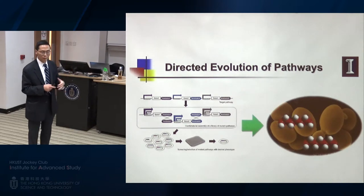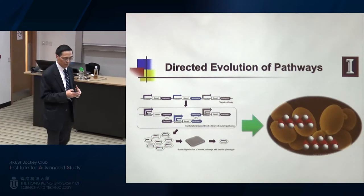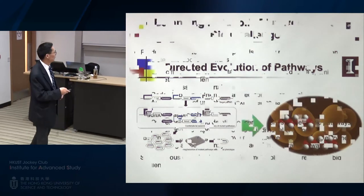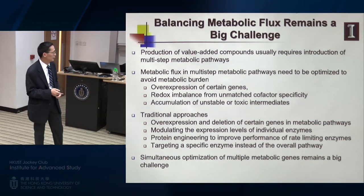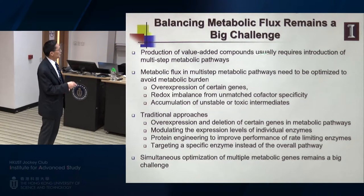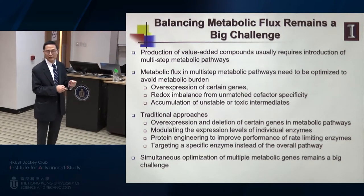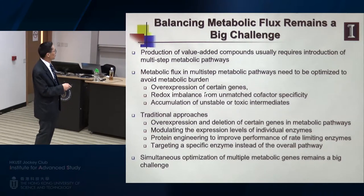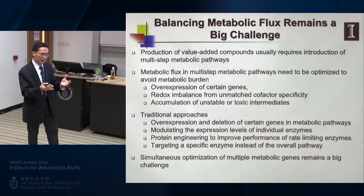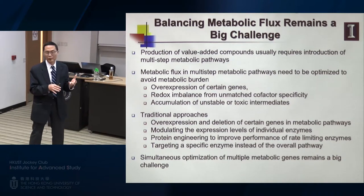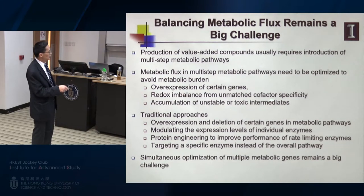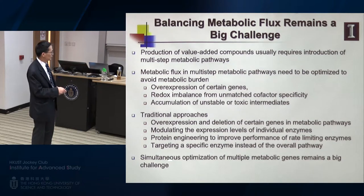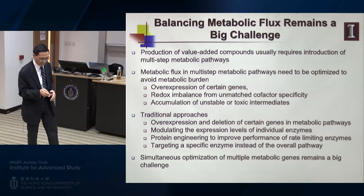We also wondered whether we can apply directed evolution to engineer pathways, not just single enzymes. Optimizing pathways turns out to be a big challenge in metabolic engineering because so many enzymes work together and you need to balance the flux — otherwise you get accumulation of intermediates, which is bad for yield, and some intermediates may be toxic to the cell. It remains challenging to simultaneously optimize the pathway.